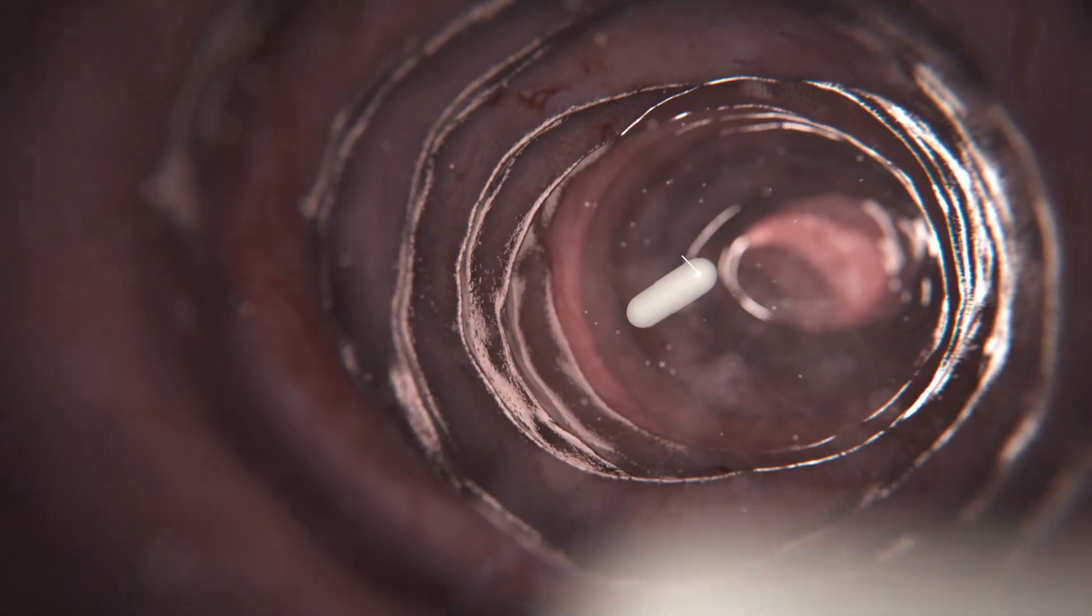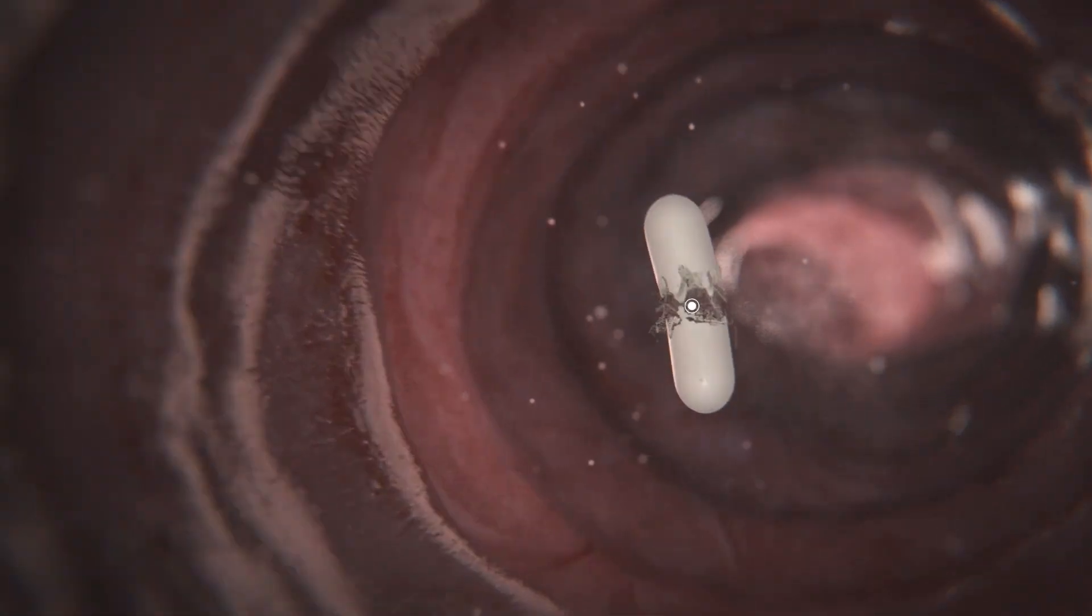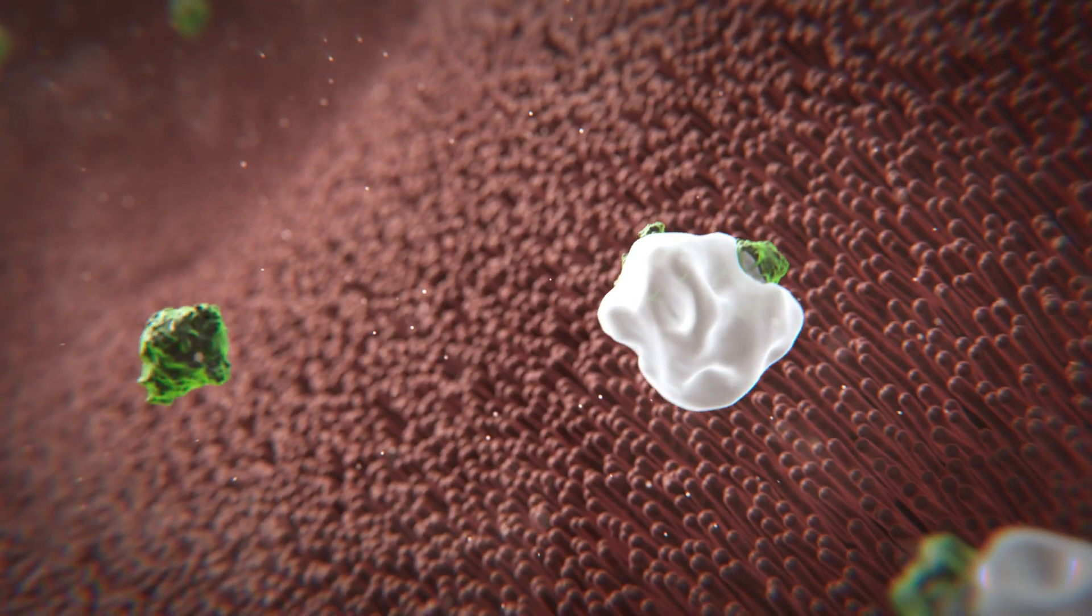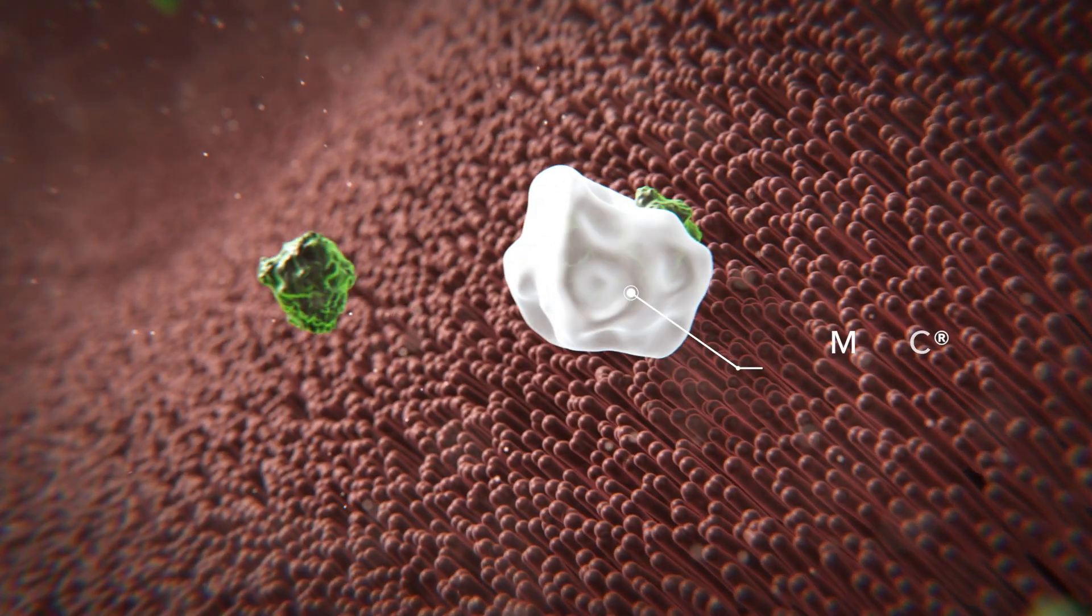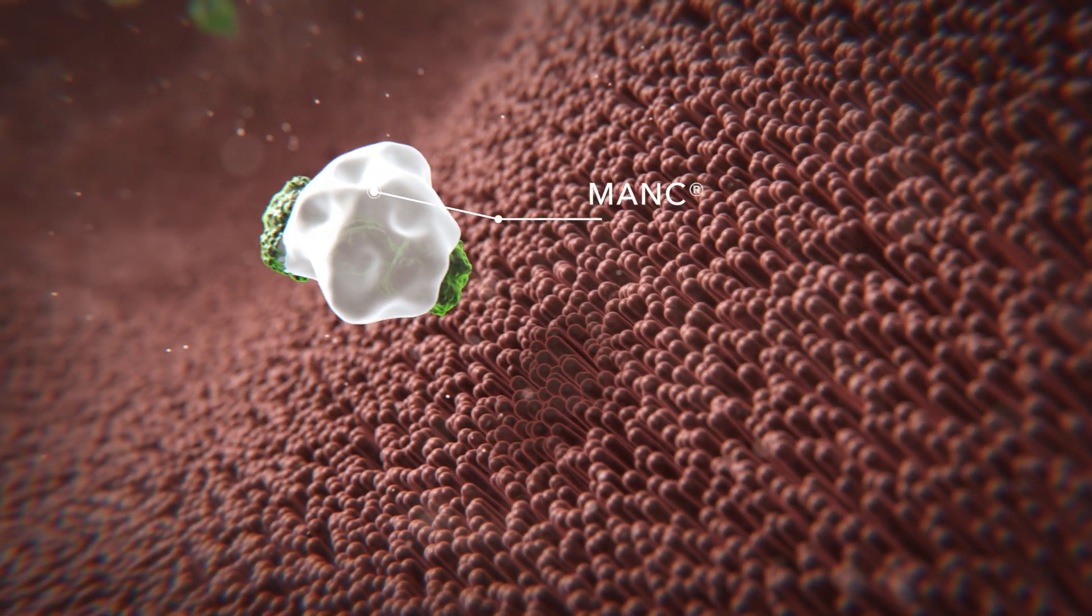The active ingredient MANC binds a large number of known irritants and pollutants as well as inflammation mediators that develop in a diseased intestinal mucosa. The bound substances are naturally discharged even before they enter the metabolic cycle.